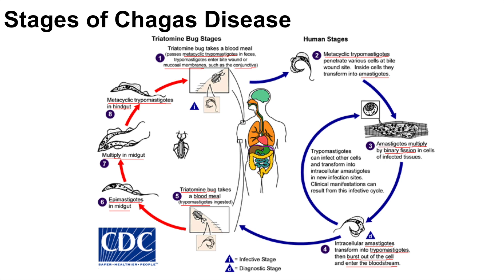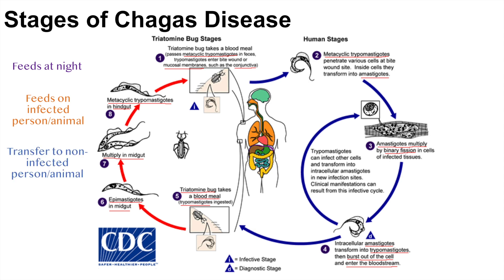Triatomine bugs typically feed at night. If someone is sleeping outside, the bug will typically bite the face of an individual — that's why they're called a kissing bug — then defecate, which can lead to infection. The bugs themselves become infected when they feed on a person or animal infected with Trypanosoma cruzi, and they continue the cycle by transferring Trypanosoma cruzi in their feces to a non-infected person or animal.